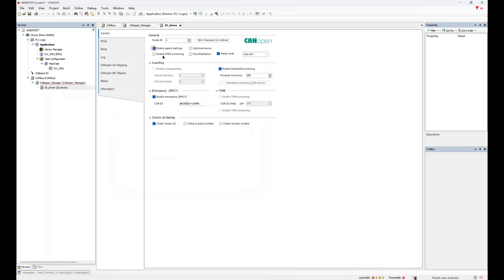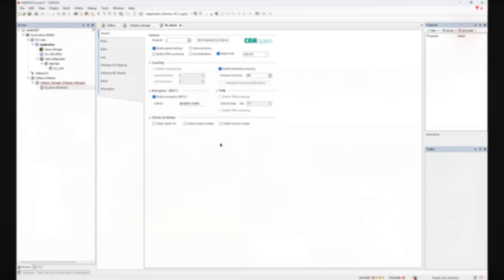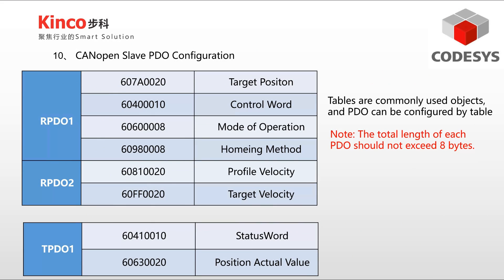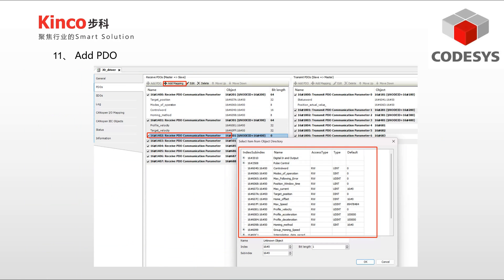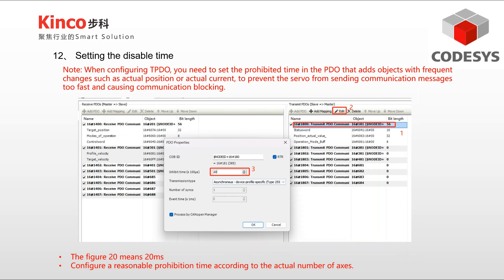I recommend enabling the Expert Settings and unchecking the Check Vendor ID function at the bottom. These are the commonly used PDO configuration parameters, which can be set according to the actual needs of the control object. Redundant PDOs will occupy bus resources, and please note that the maximum length of PDO is 8 bytes. It is also necessary to set an inhibit time to avoid excessive communication speed occupying excess bus resources.